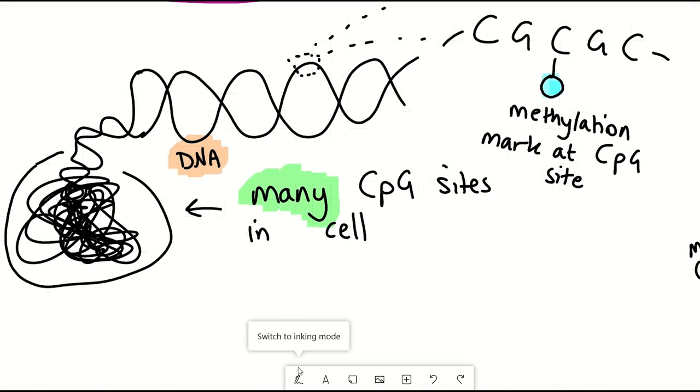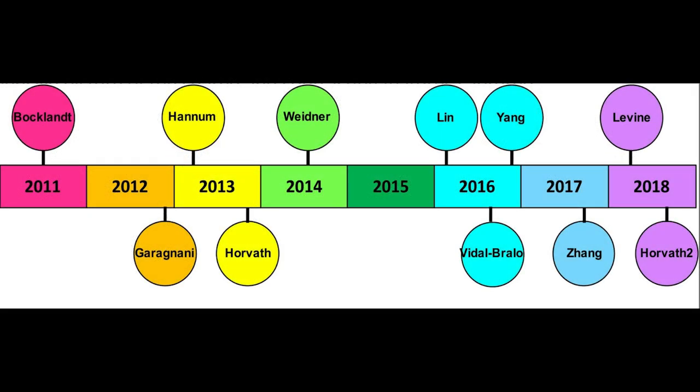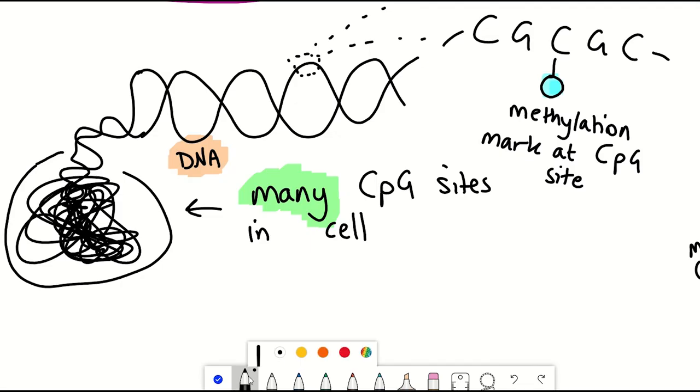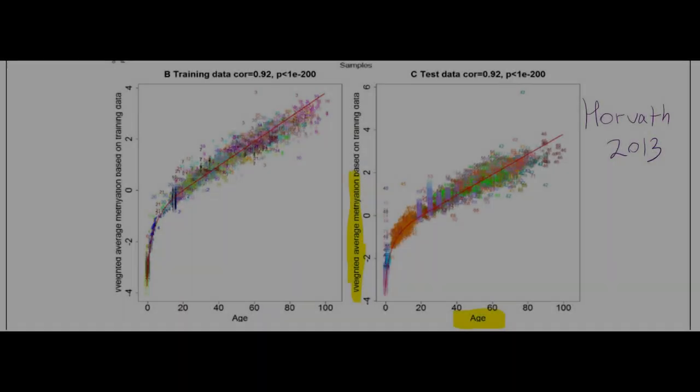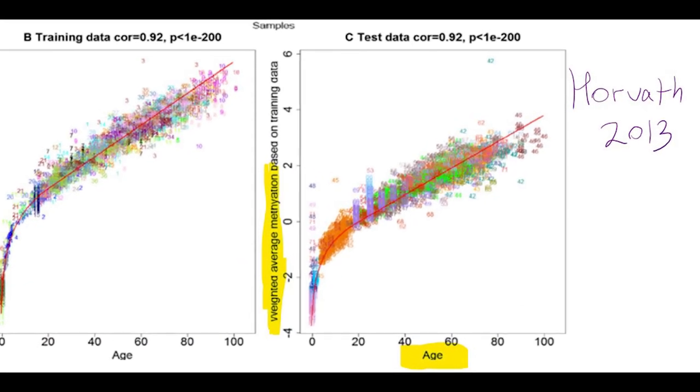And many different epigenetic clocks have been made, some of which are highlighted in this timeline you can see here, albeit it's now a little bit outdated. But all of the clocks quantitatively combine different DNA methylation levels at lots of different sites into a composite methylation based age predictor and these are shown very high correlations with chronological age.